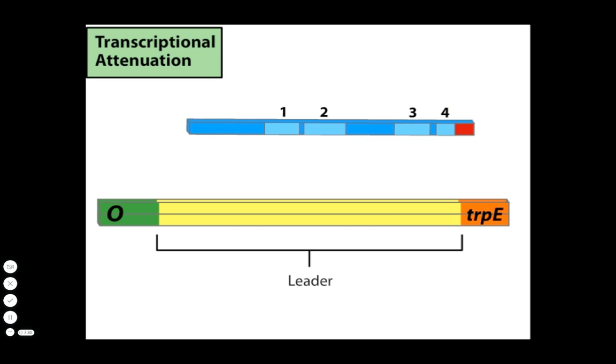Another important segment in the leader is a coding region for a leader peptide. The coding region is very small and ends with a stop codon between regions 1 and 2. In the middle of the coding region are two adjacent codons that specify tryptophan.